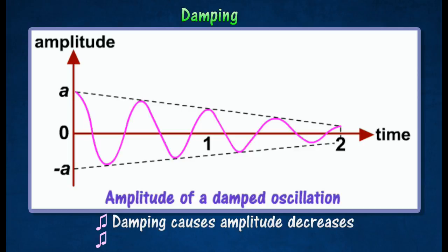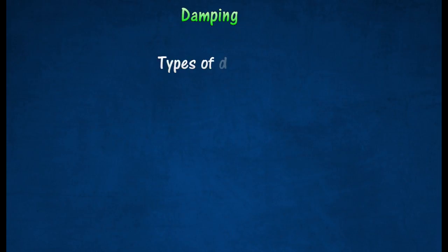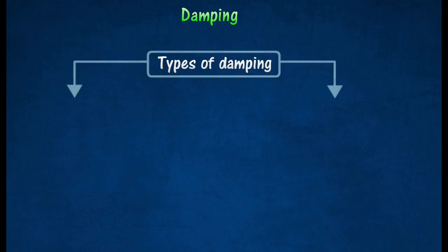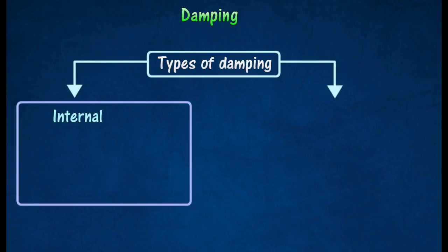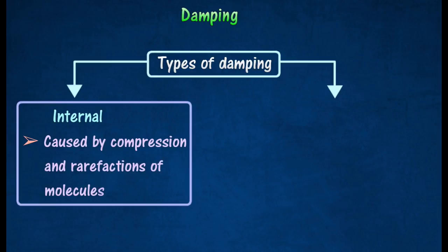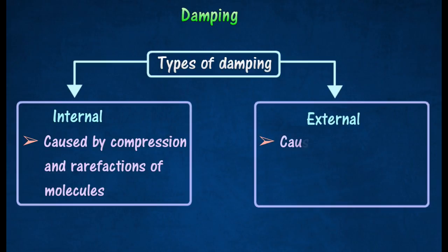This phenomenon is caused by air resistance and friction. In general, there are two types of damping forces: internal damping due to the internal resistance against extension and compression by molecules in the oscillating system itself, and external damping due to air resistance and frictional force.